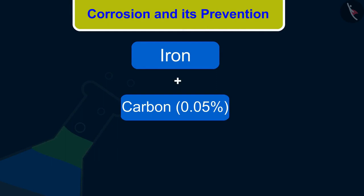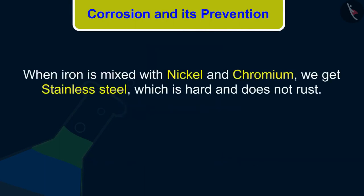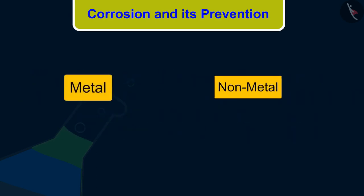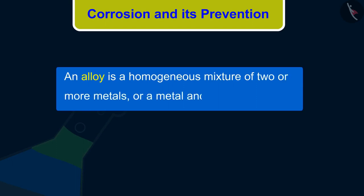When iron is mixed with nickel and chromium, we get stainless steel, which is hard and does not rust. Thus, if iron is mixed with some other substance, its properties change. In fact, the properties of any metal can be changed if it is mixed with some other substance. The substance added may be a metal or a non-metal. An alloy is a homogeneous mixture of two or more metals, or a metal and a non-metal.